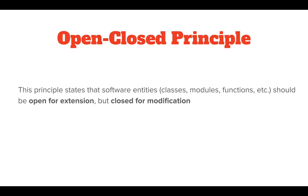The Open-Closed Principle states that software entities such as classes, modules, functions, etc. should be open for extension but closed for modification. The two key terms are 'open for extension' and 'closed for modification'. If these terms seem complicated, stay with me — you will understand by the end of this video.